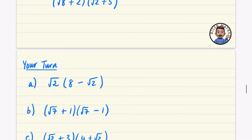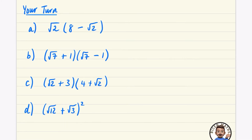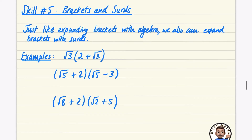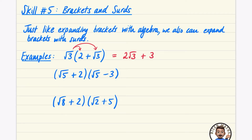I'm going to do three examples and then you can have a go at four questions. Just like with algebra, you take the number outside the bracket — the factor — and multiply it by both things inside. So you get root three multiplied by two, which is two root three, and then root three multiplied by root three, which is just three. Note these two terms can't be simplified together because one is two lots of root three and the other is an integer.